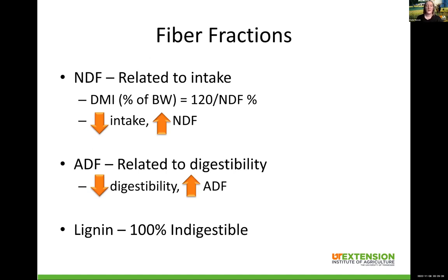The fiber fractions break down like this: NDF, or neutral detergent fiber, is inversely related to intake. As the NDF concentration increases, the animal's ability to take in that forage decreases. There's a rough estimation equation: 120 divided by the NDF percentage gives roughly the dry matter intake that animal can consume as a percentage of body weight. For a brood cow we're looking for about two percent, which means we're looking for about 60% NDF. If we do 120 divided by 60, the cow can eat about two percent of her body weight. I use 60% NDF as a guide: above 60, they'll eat less; below 60, they'll eat a little more.